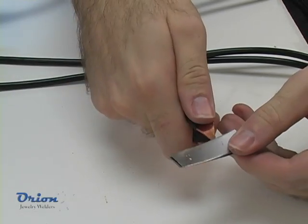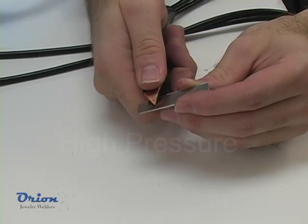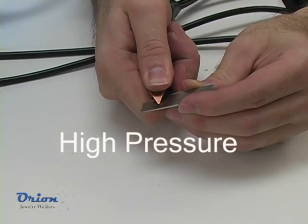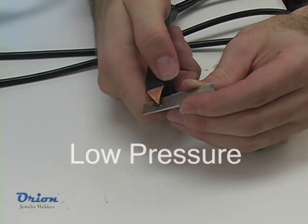The pressure you apply to the weld joint is also an important factor in the spot welding process. More pressure translates to less heat, and conversely, less pressure will translate to a hotter weld.